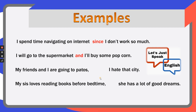'My friends and I are going to Patos. However, I hate that city.' This is clearly an opposition. If I use 'so I hate that city,' it's okay, but it's very weird. The most appropriate here is something showing opposition. If you go to Patos and you hate the city, it doesn't make much sense — unless you have something very important to do. 'My sis loves reading books before bedtime. Then she has lots of good dreams.' You can also use 'consequently' — no problem. If you use a connector of consequence or result, that's fine.